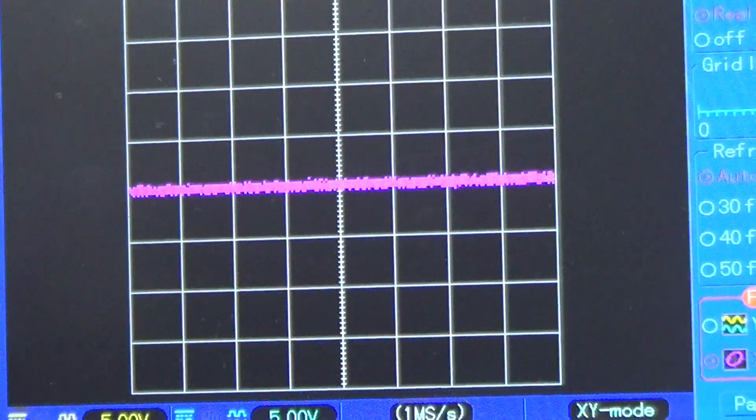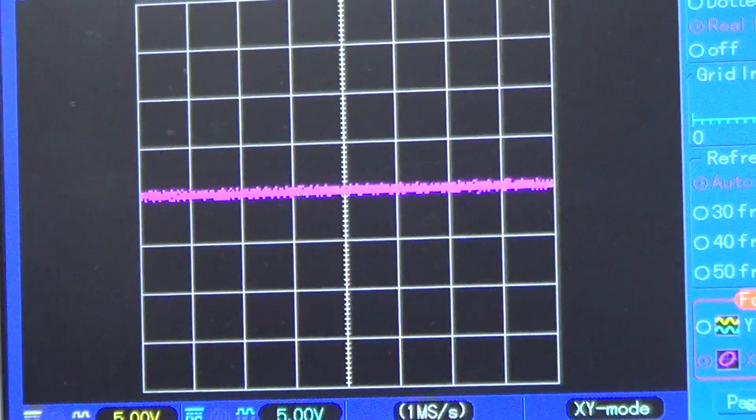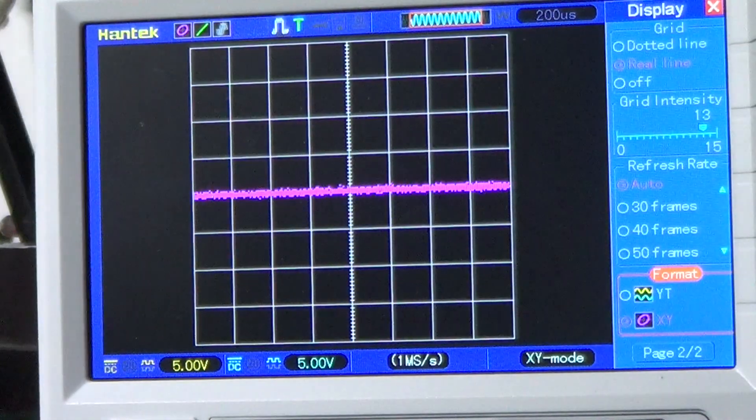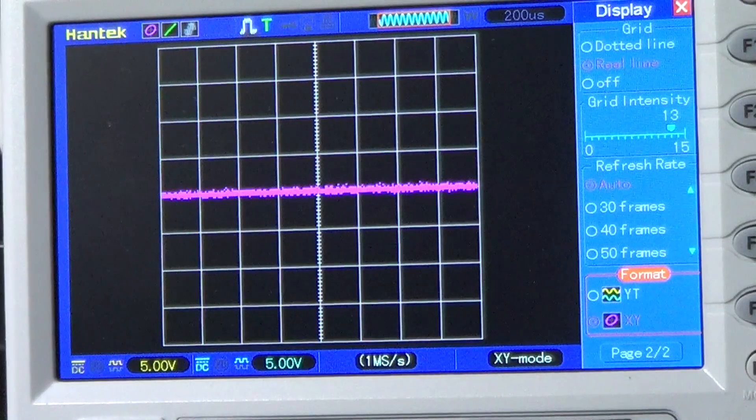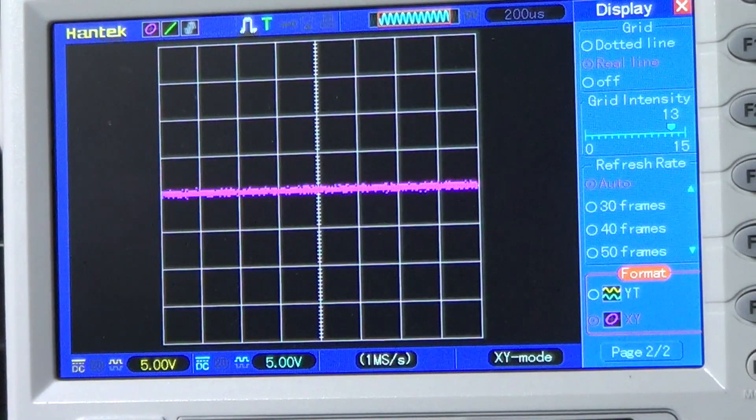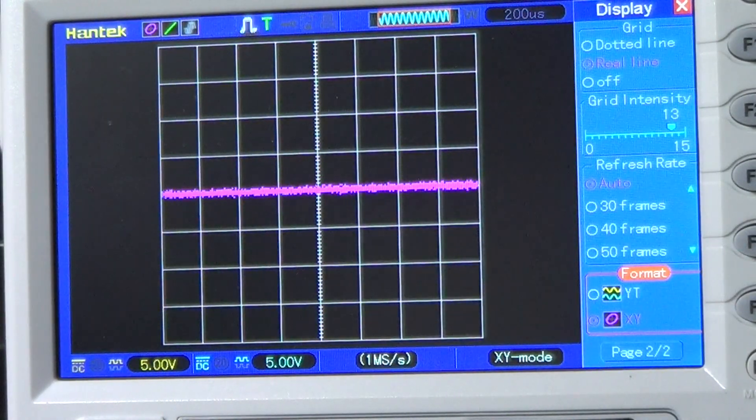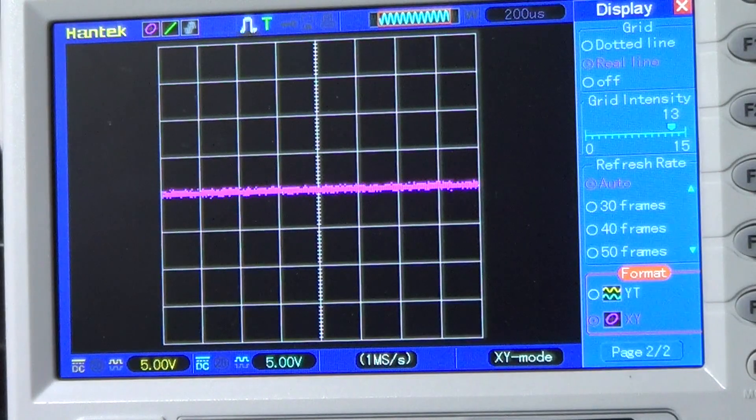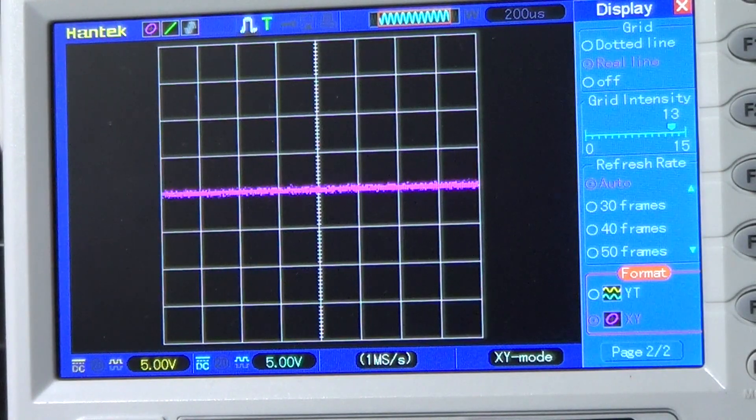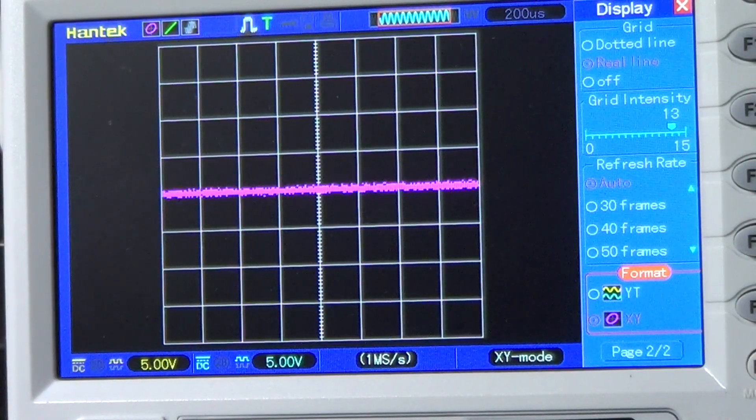Right now there is no DUT and the input is open, so the oscilloscope diagram is a straight horizontal line. A short circuit will produce a perfectly vertical line, so everything with a resistance in between zero and infinity will produce a straight line at an angle. The smaller the resistance, the higher the angle with the horizontal.